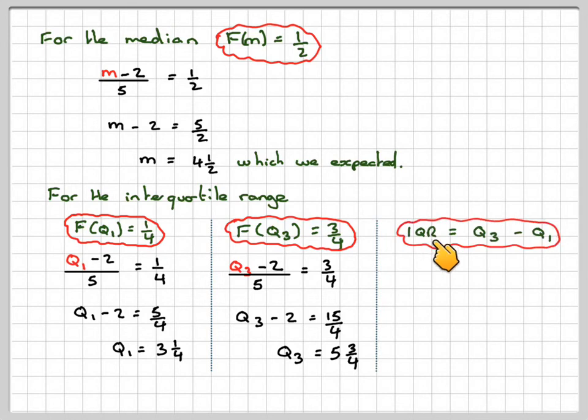The interquartile range, which we write like that, is Q3 minus Q1. So it's going to be 5 and 3 quarters minus 3 and a quarter, which is 2 and a half.